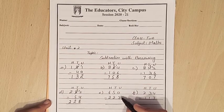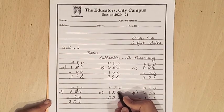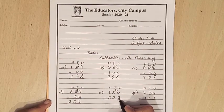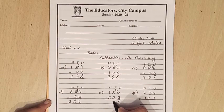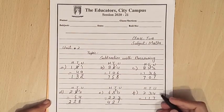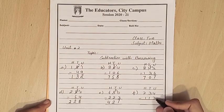0 minus 3, we have 10. We borrow from 4. 10 minus 3 is 7. 4 minus 2 is 2. 6 minus 2 is 4. 427. Next, 4 is smaller than 7.